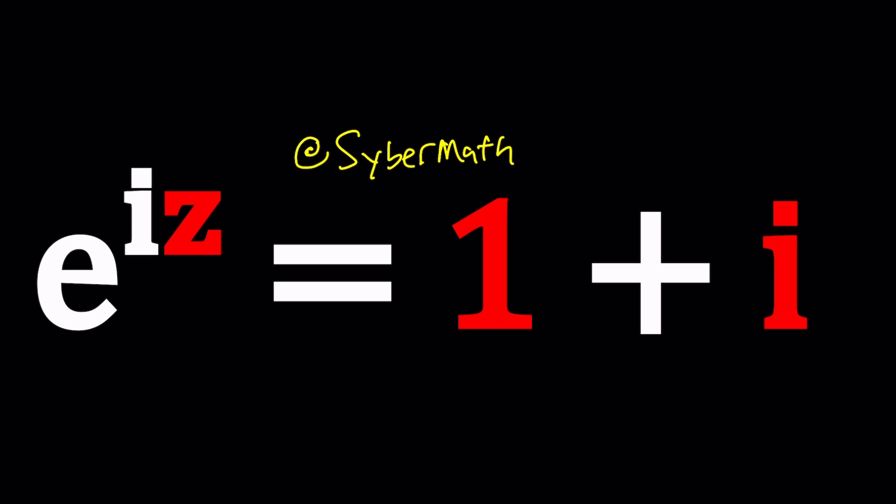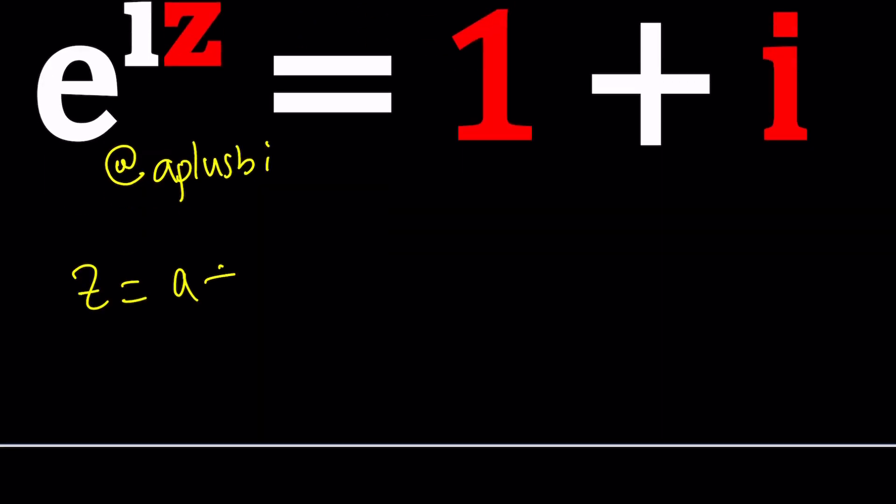So what is this channel called? A plus bi, because we use that all the time. How do we use it? Let's go ahead and find out. For example, to find what z is in this equation, we can replace z with a plus bi.